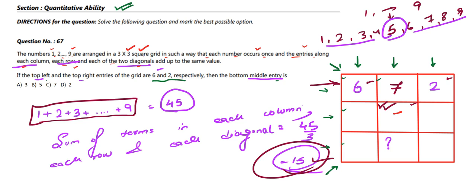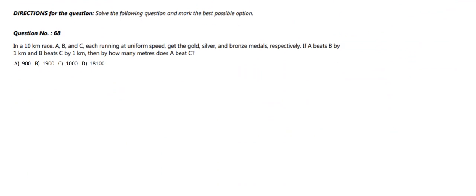Now the center block is 5. Looking at the middle column, we have 7 and 5, which sum to 12. Subtracting from 15, the bottom-middle entry is 15 − 12 = 3. So the answer is 3, which matches option A. Option A is the correct answer.